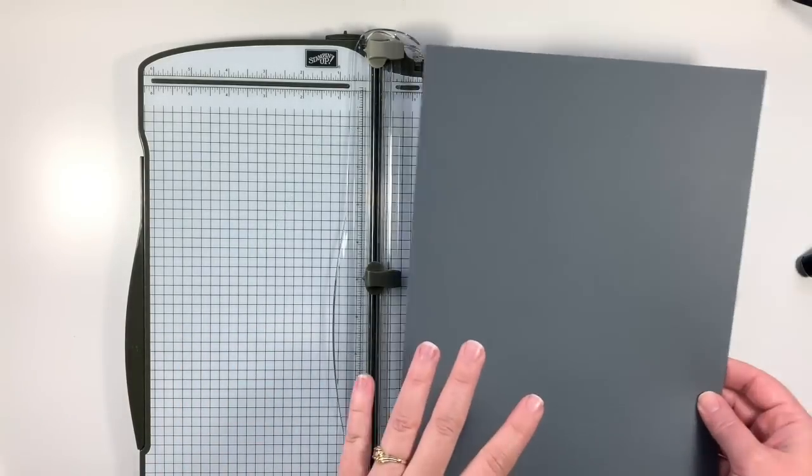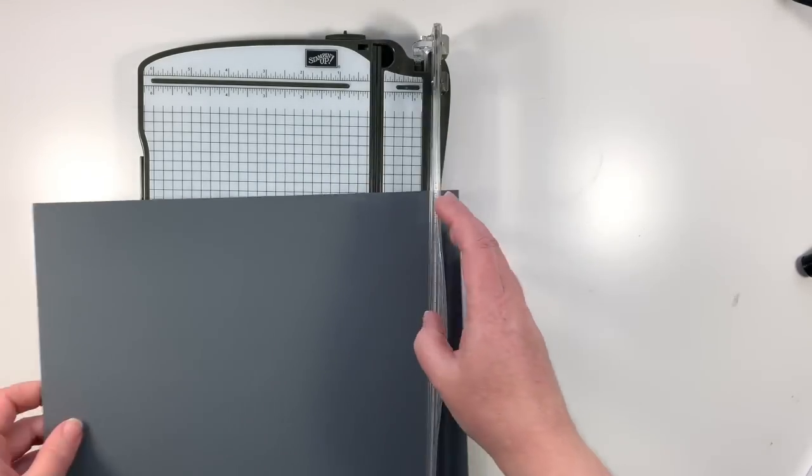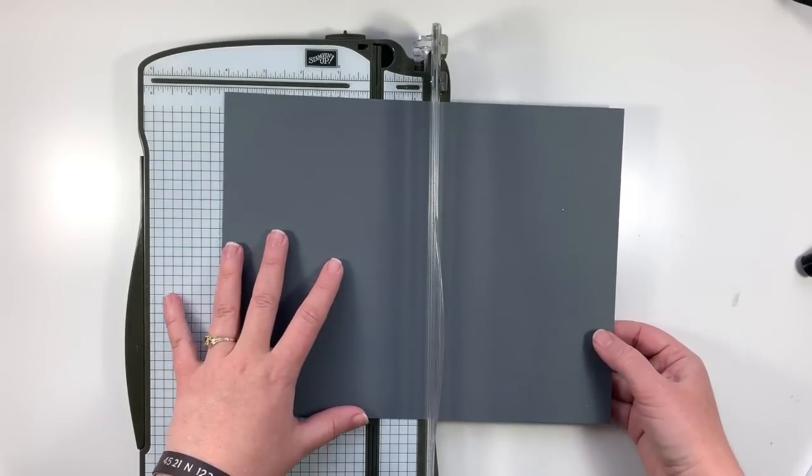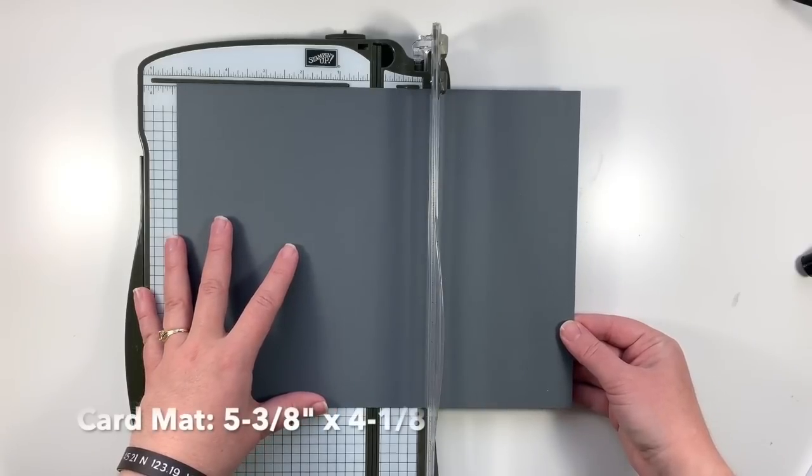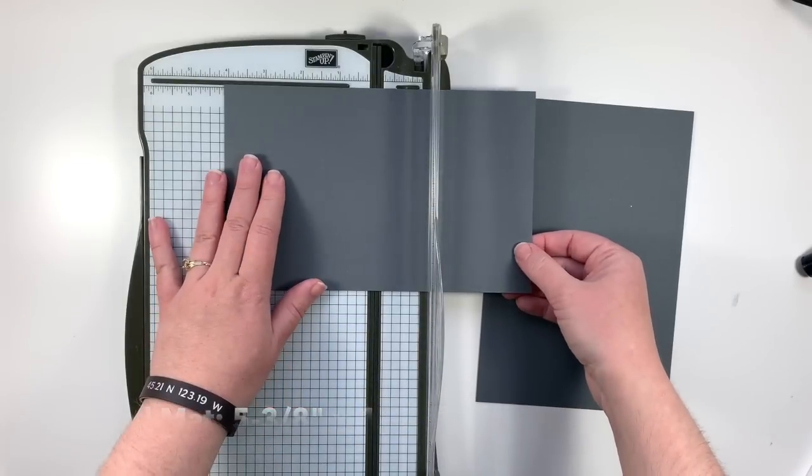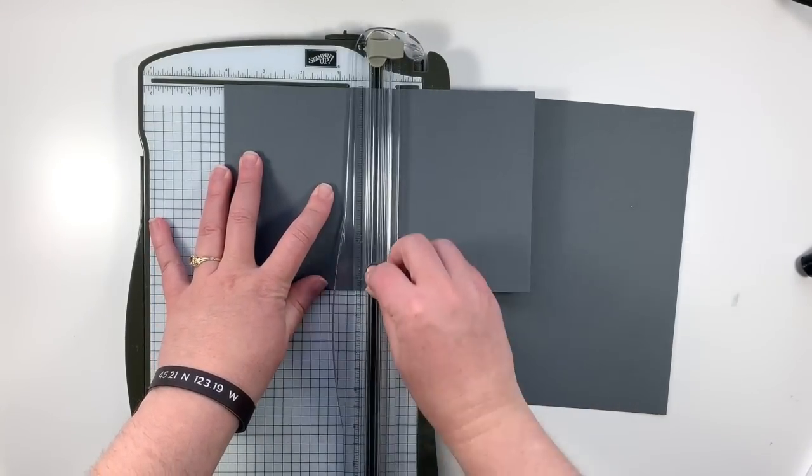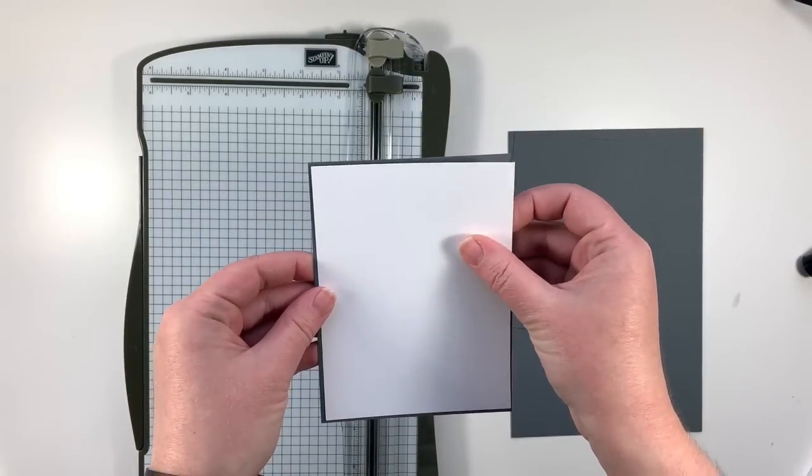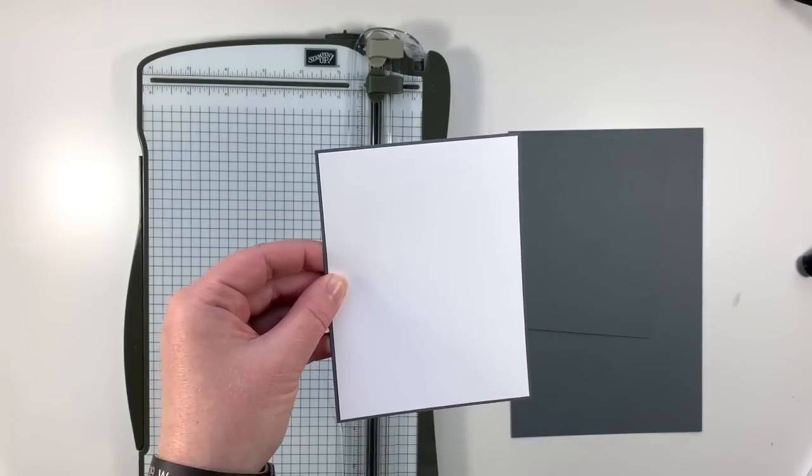And I'm going to use a piece of our basic gray card stock to cut a thin mat to go underneath the top layer on the front of our card. So this piece is going to measure 5 and 3⁄8 by 4 and 1⁄8. So it's going to give us a very thin border on the front of our card, but we're going to see a lot more gray underneath once we get those punches out.